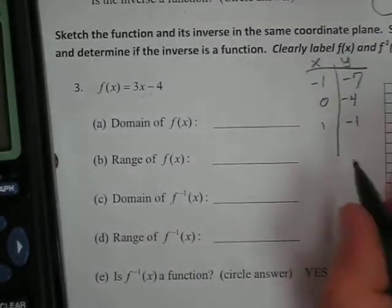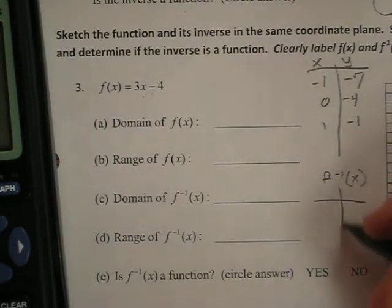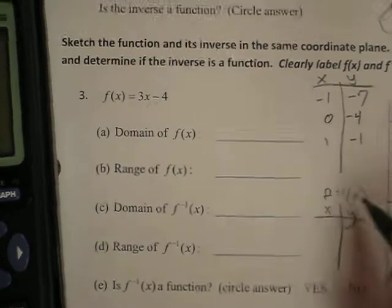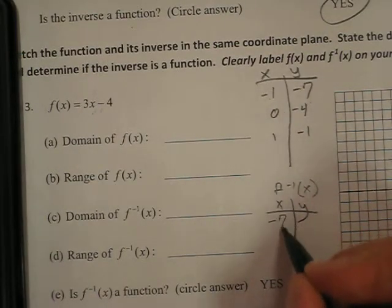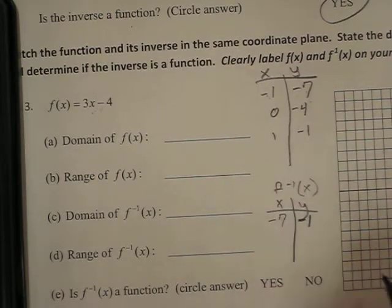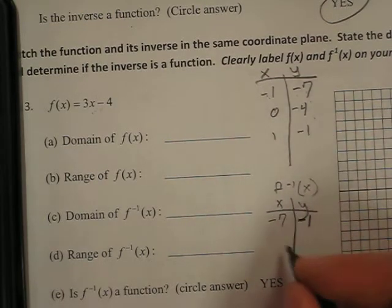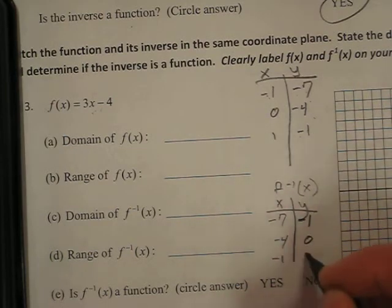And remember, to find the inverse f⁻¹(x), we're going to switch the x and the y's. So here, I had negative 1, negative 7, and now it becomes negative 7, negative 1. 0, negative 4 becomes negative 4, 0. And 1, negative 1 becomes negative 1, 1.